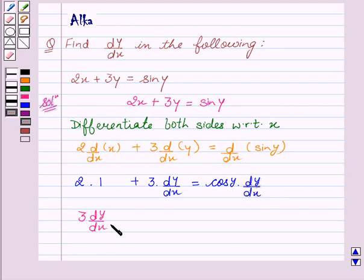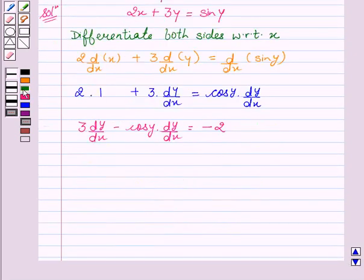This can be written as 3 dy/dx minus cos y dy/dx equal to minus 2. Or this can be written as, on taking dy/dx common, we get dy/dx times (3 - cos y) equal to minus 2.